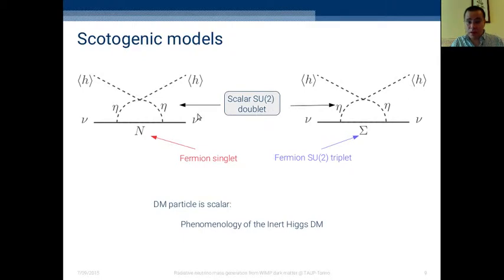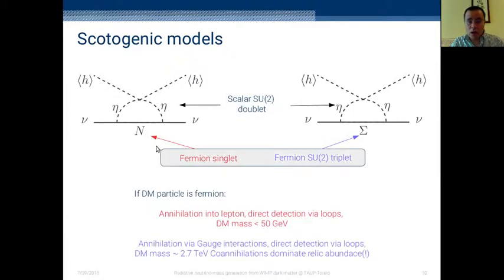If the dark matter among all these particles is the neutral part of this scalar doublet, the phenomenology of this model is practically the same as inert Higgs dark matter. Because most of these particles are at one loop, they don't take a special role for dark matter phenomenology. However, if the lightest particle is the singlet fermion, you expect the signature of this dark matter is to annihilate mainly or exclusively to leptons. Direct detection is not possible at tree level, only via loops, and the dark matter mass has to be light, less than 50 GeV roughly.